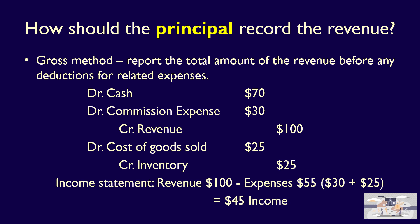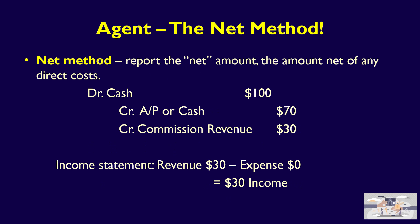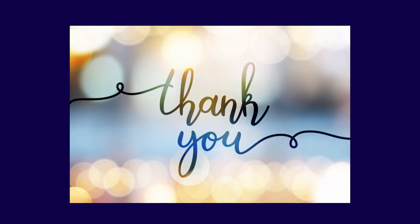On their income statement, they would show revenue of $100, less expenses of $55 — the total of the $30 commission expense and the $25 cost of goods sold — resulting in income of $45. So, an entity which is a principal must use the gross method, recording revenue before any related expenses, and an entity which is an agent must use the net method, recording revenue net of any direct costs. That's it for the principal-agent relationship. Thanks so much for watching.